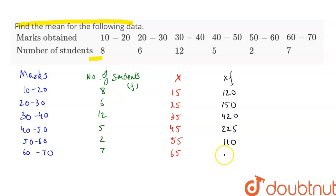And 65 into 7, that is 455. If we total this, this comes out to be 1480, and the total for f is 40.